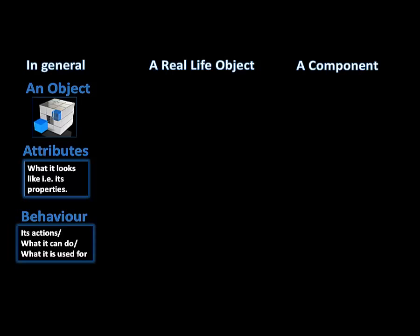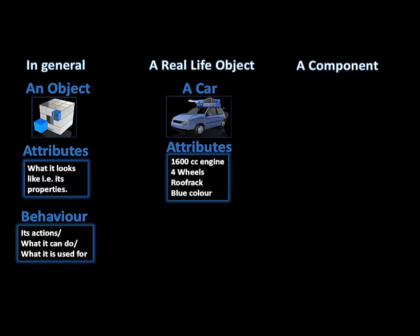Let's look at this by using a real life object as an example. I am going to use a car as an example. A car is an object. To explain to someone how a specific car looks, you must explain the attributes of the car. The attributes will be things like the engine capacity, the number of wheels, whether it has a roof rack or not, and its color.